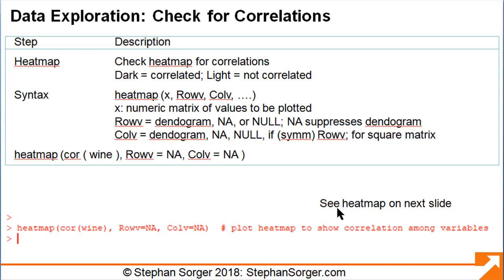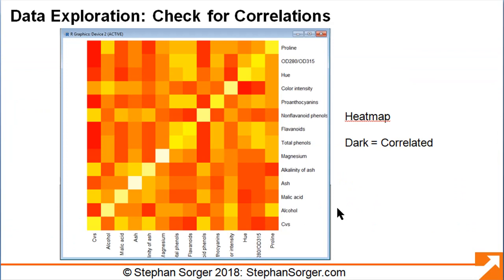We can check the data for correlations, which can be interpreted as potential extra variables. We check the correlations using the cor function in R, and display them using a heatmap using the heatmap function in R. The line of code shown computes the correlations in the wine dataset we read in, and then plots out a heatmap of the correlations it found. Here we see the resulting heatmap — dark squares represent strong correlations, and we can see that the heatmap includes several strong correlations.